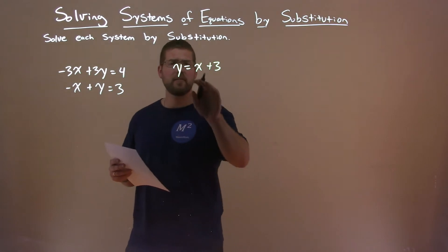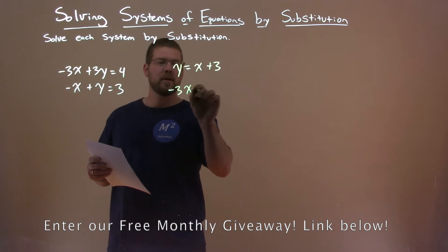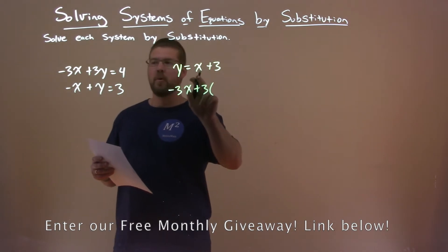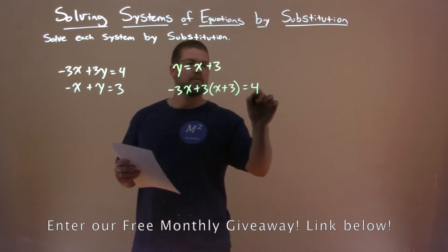So we take that information and we're going to plug it into y in the first equation. Minus 3x plus 3 times y, which is x plus 3 here, equals 4.